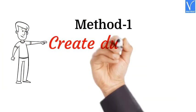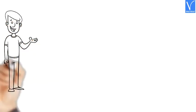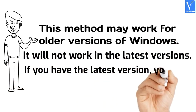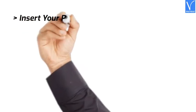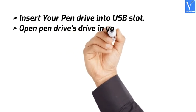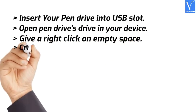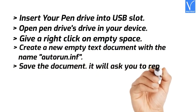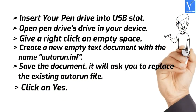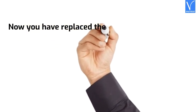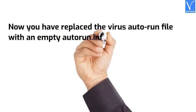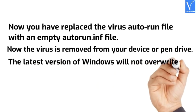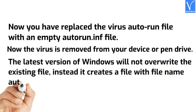Method 1: Create a duplicate autorun.inf file. This method may work for older versions of Windows — it will not work in the latest versions, so if you have the latest version you can skip this method. Insert the pen drive into the USB slot and open the pen drive in your device. Right-click on empty space and create a new empty text document named autorun.inf. Save the document — it will ask you to replace the existing autorun file. Click Yes. Now you have replaced the virus autorun file with an empty autorun.inf. Note: the latest version of Windows will not overwrite the existing file; instead it creates a file named autorun.inf separately.